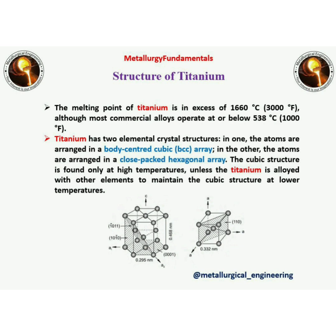Alpha structure is shown by unalloyed titanium. Near-alpha structure is shown by titanium 5-aluminium 6-tin 2-zirconium 1-molybdenum 0.2-silicon. Alpha-beta structure is shown by titanium 6-aluminum 4-vanadium. Beta structure is shown by titanium 13-vanadium 11-chromium 3-aluminum.